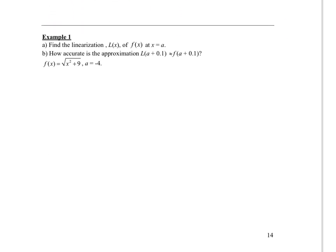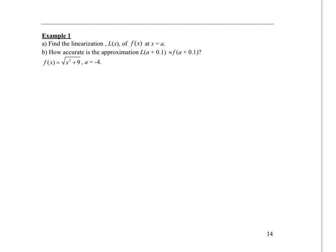Example one is asking you to find the linearization L of x of f of x at x equals a. This part is asking you to find the tangent line and isolate y. You have to know where the tangent line is, and they're going to tell you at a specific x value. So all you have to do is write the equation of the tangent line and isolate y — we want this at x equals negative 4.